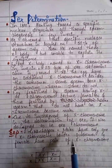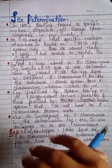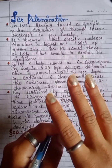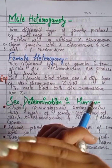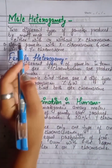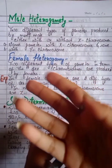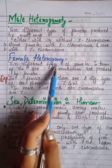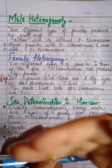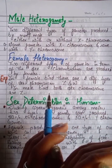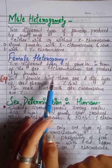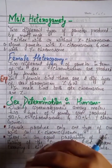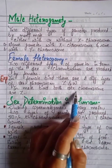For example, in grasshoppers, males have only one X chromosome besides autosomes, while females have a pair of X chromosomes (two X chromosomes). When a male organism produces two different types of gametes, this is called male heterogamety — either with or without X chromosome, or with X or Y chromosome. Female heterogamety is when a female produces two different types of gametes in terms of sex chromosomes. For example, in female birds there are two different sex chromosomes: Z and W, while male birds have ZZ.